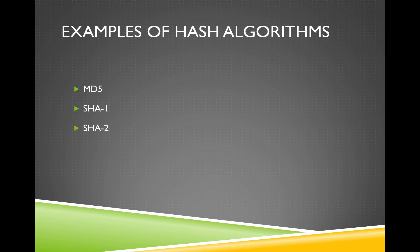Here are some examples of hash algorithms: MD5, SHA1, and SHA2. MD5 is considered really insecure at this point in time, so if you see this being used, that's something you can definitely consider a concern. SHA1 is pretty commonly used, especially in certificates these days — that's the one you'll see in most certificates.